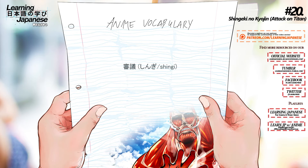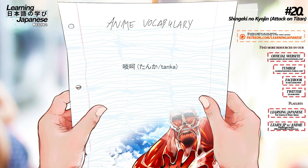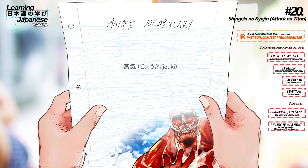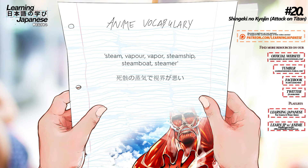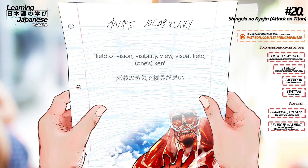審議 (shingi) — Deliberation. 断罪 (tanka) — Caustic words. 死骸 (chigai) — Body, corpse, remains. 蒸気 (jouki) — Steam, vapor, steamship, steamboat, steamer. 視界 (shikai) — Field of vision, visibility, view, visual field.